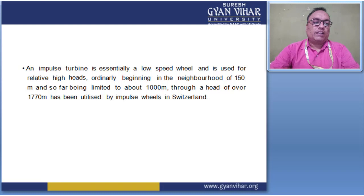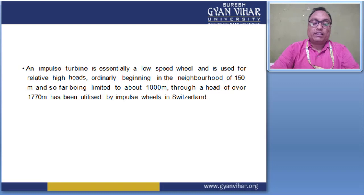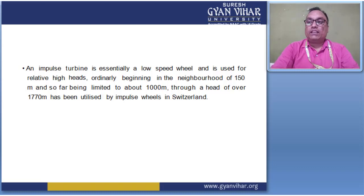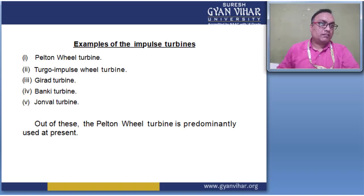A head of over 1770 meters has been utilized by an impulse wheel in Switzerland. In this impulse turbine, a jet of water pushes the rotor and the water jet collides directly with the rotor blades. An impulse turbine contains a series of blades and nozzles, which are the major components. The nozzle and blades are the major components of an impulse turbine.